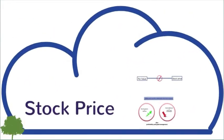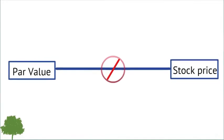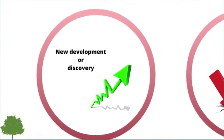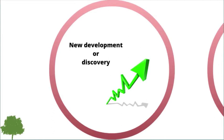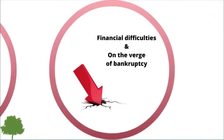Stock Price. There is no relationship between the par value of a stock and its actual price. Different events influence the stock price. When there is a new development or discovery, investors may expect bigger profits from the company, which can cause the stock price to rise. On the other hand, when a company that has financial difficulties is on the verge of bankruptcy, they will probably lose many potential investors, which will cause its stock price to fall.